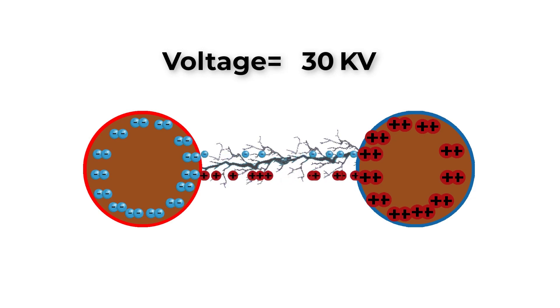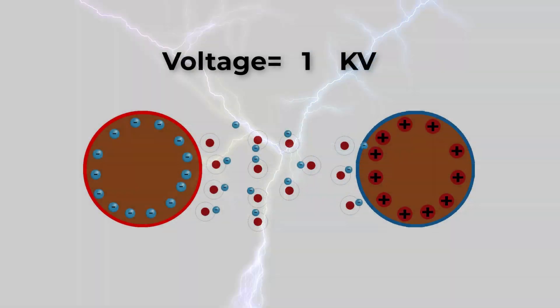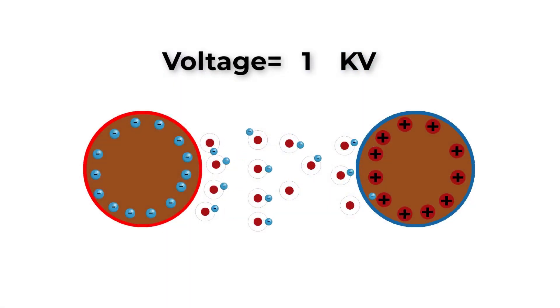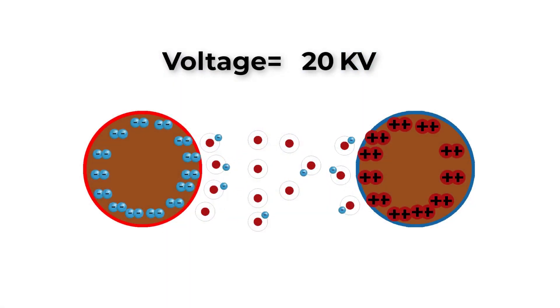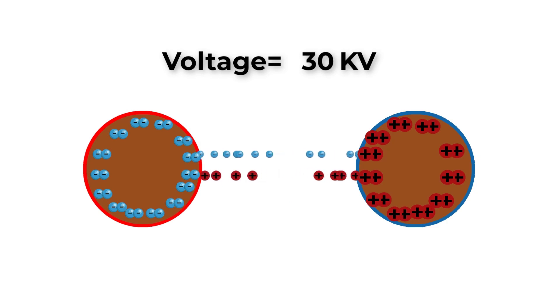The ionized air results in electric discharge around the conductors due to the flow of these ions. This gives rise to a faint luminescent glow, along with a hissing sound accompanied by the liberation of ozone. If the voltage across the lines continues to increase, the glow and hissing noise becomes more and more intense, inducing a high power loss into the system.